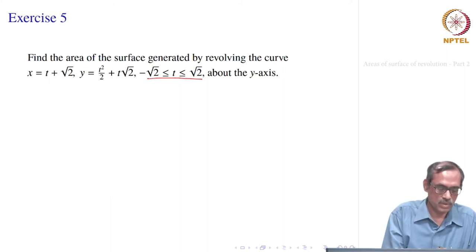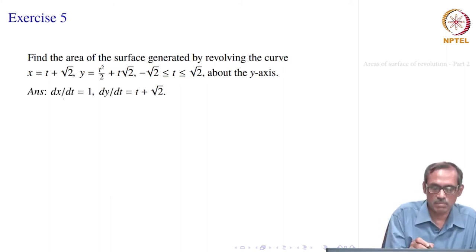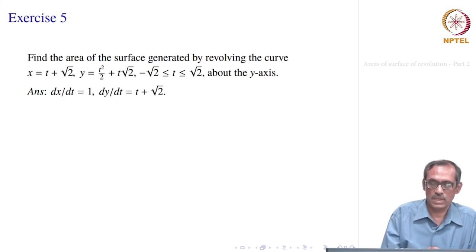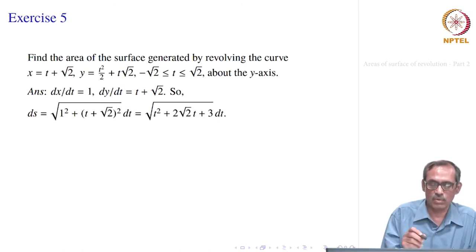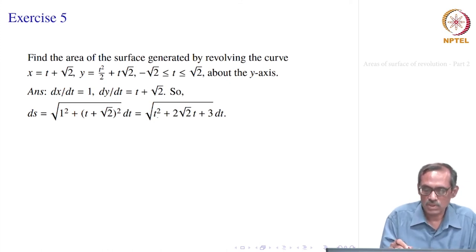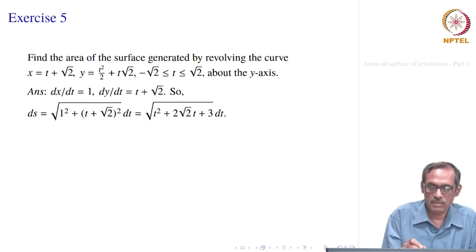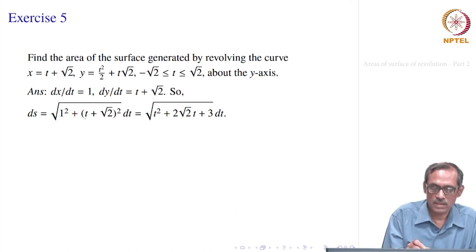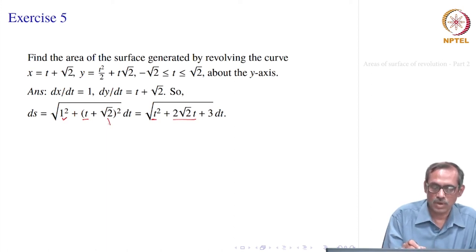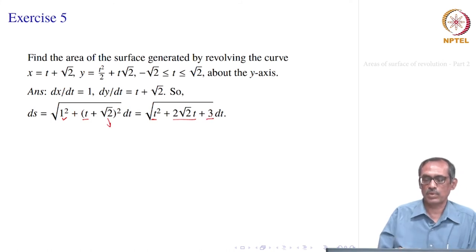This curve is given in parametric form, so we compute the derivatives: dx/dt = 1 and dy/dt = t + √2. Then ds = √((dx/dt)² + (dy/dt)²) dt = √(1 + (t + √2)²) dt = √(t² + 2√2·t + 3) dt.